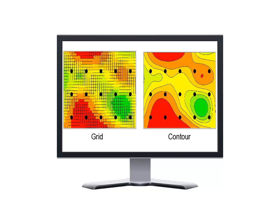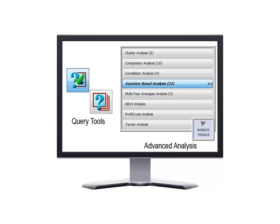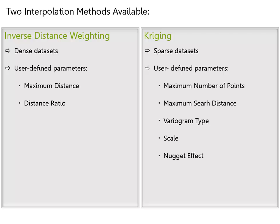Interpolation is used any time you view a grid or contour style map that was created from point data, and also any time an analysis is performed, whether that be query results in SMS Basic or any of the analysis functions in SMS Advanced. Depending on the type of data you are working with, the type of interpolation best suited for the job can differ, which is why SMS includes two models of interpolation: inverse distance weighting and kriging.